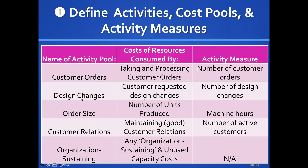The company has design changes because they apply different color batteries or labels for specific customers. For example, a new company might request a label that says 'Hanson's Batteries,' requiring a design change. The activity measure is how many design changes were made. Order size is based on machine hours determined by how many units are produced. Customer relations tracks how many active customers the company serves.